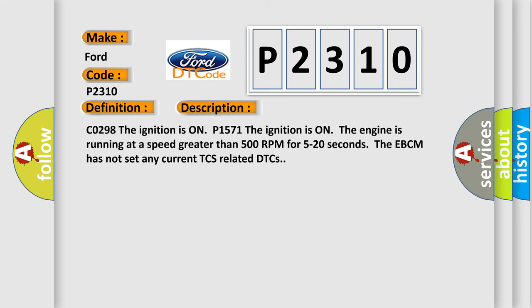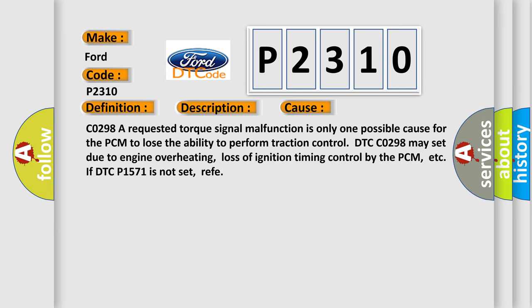Conditions: CO298 — the ignition is on. P1571 — the ignition is on, the engine is running at a speed greater than 500 RPM for 5 to 20 seconds, and the EBCM has not set any current TCS-related DTCs. This diagnostic error occurs most often when a requested torque signal malfunction causes the PCM to lose the ability to perform traction control. DTC CO298 may also set due to engine overheating or loss of ignition timing control by the PCM.